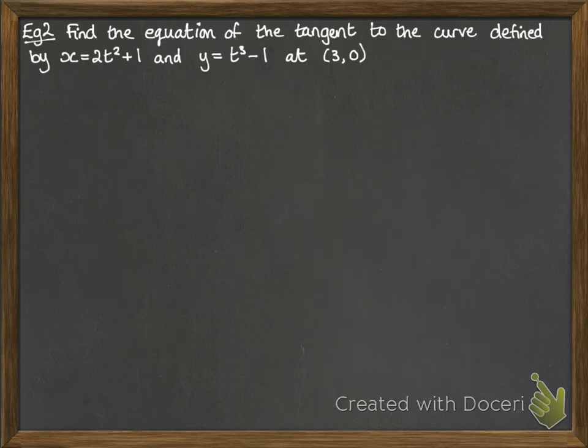Okay, so next example. We want to find the equation of the tangent to the curve that's defined by these two parametric equations here, and we're going to find that tangent at the coordinate of (3, 0). So we need dy by dx because we'll need the gradient of that line.